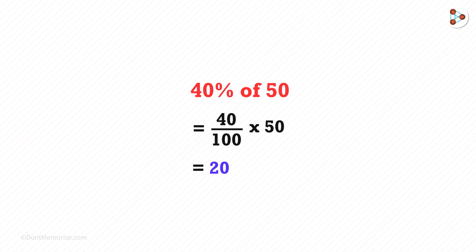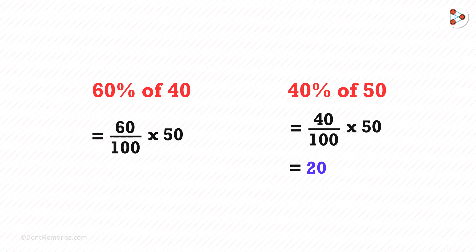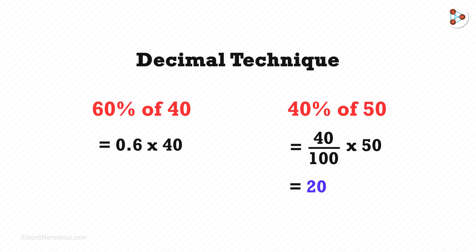This was just a basic method. Say we have 60% of 40 — how do we solve this quickly? If we use the traditional way, then we may take some time. So here we will use the decimal technique. 60% is 0.6, so we write this as 0.6 multiplied by 40. We get 6 multiplied by 4, which is 24. So you got the answer really easily and quickly.